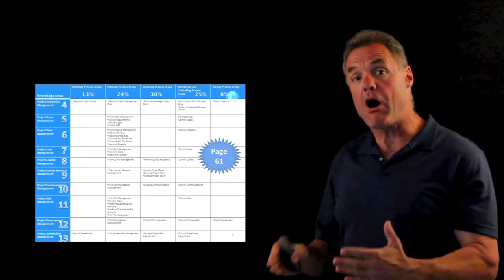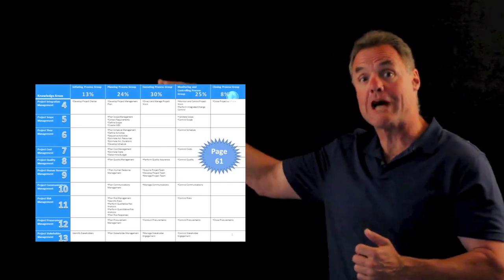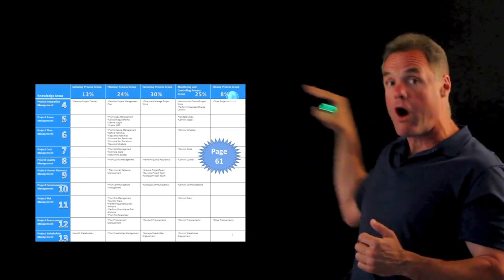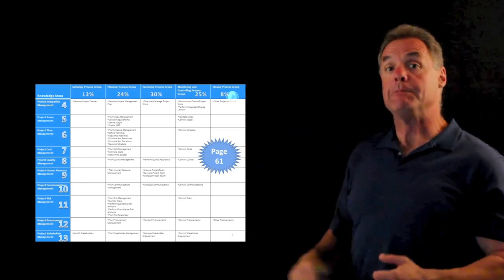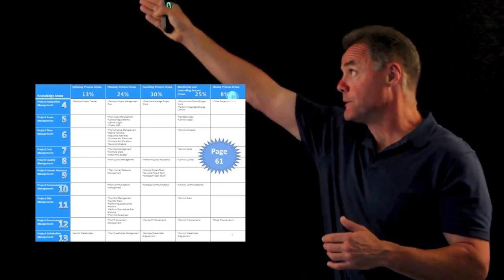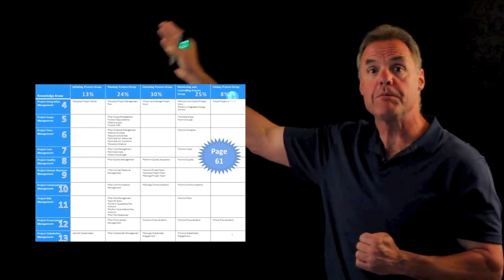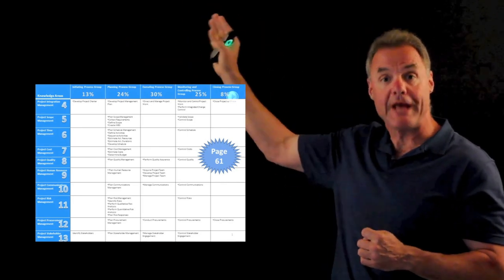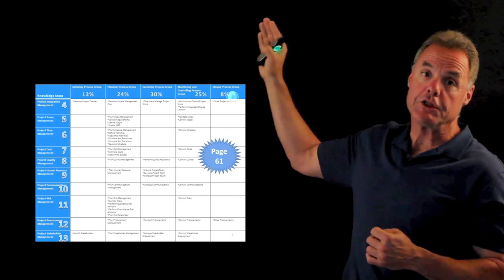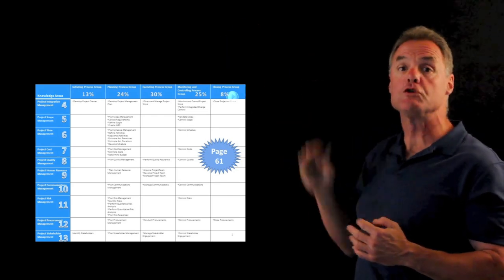So as you'll see, the PMBOK is written Chapter 4, Chapter 5, Chapter 6 across the process groups, but you actually run a process from the top to the bottom and from left to right. The initiate process group, the planning process group, the execute process group, the monitor controlling process group, and the closing process group.